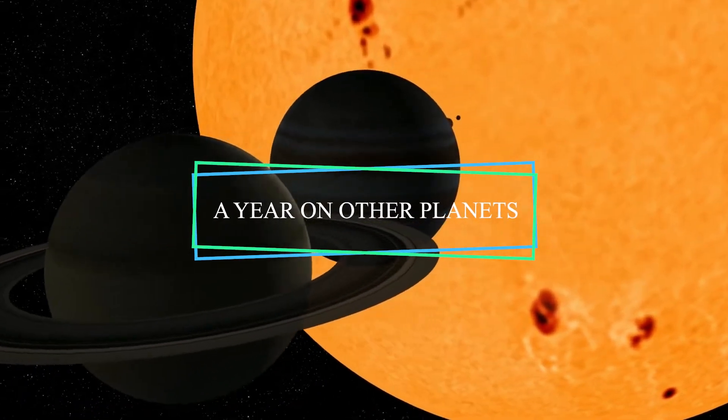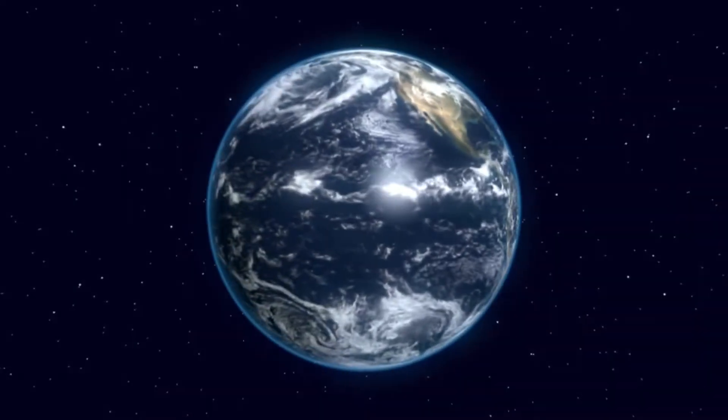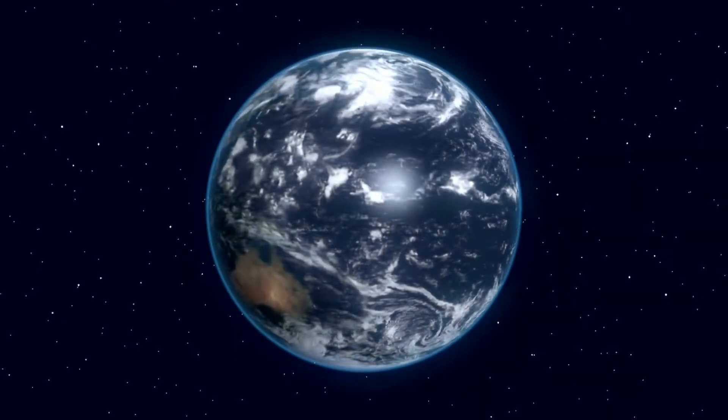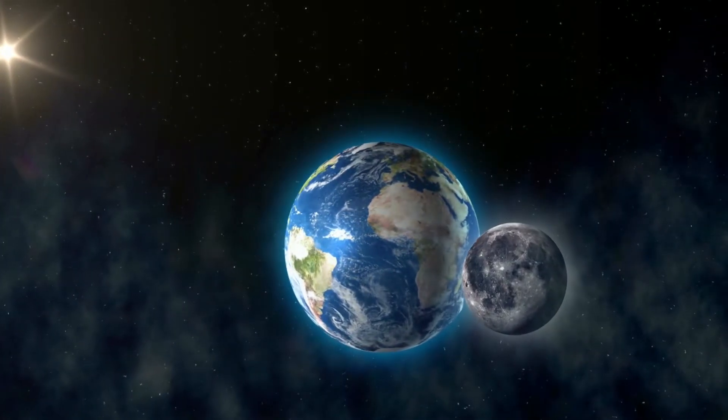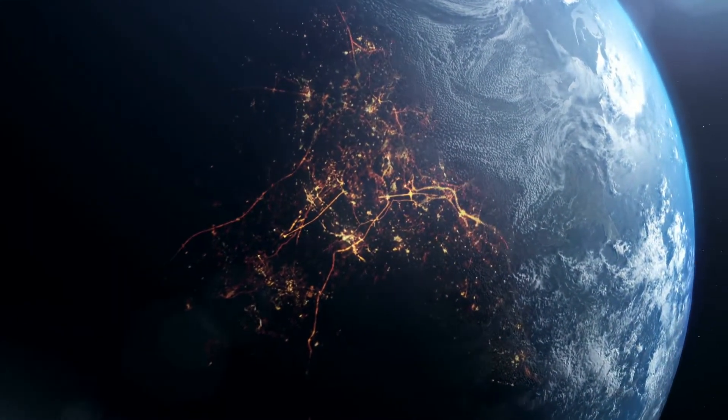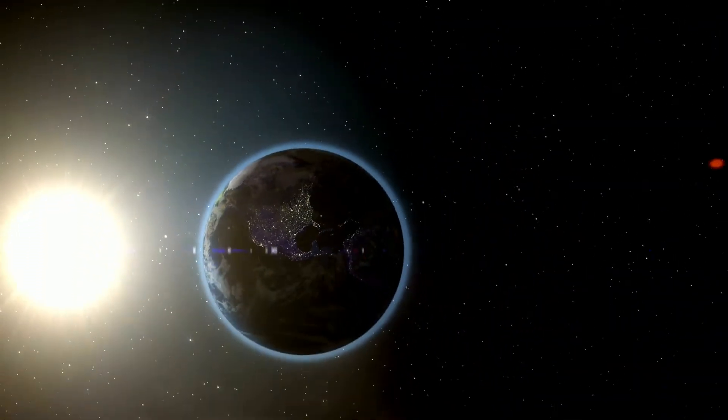How long is a year on other planets? A year on Earth is approximately 365 days. Why is that considered a year? Well, 365 days is about how long it takes for Earth to orbit all the way around the sun.